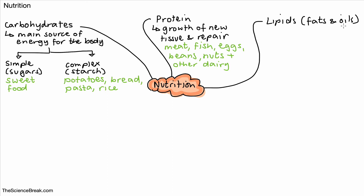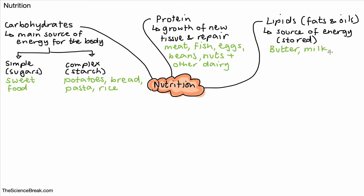Next, let's look at a food group called lipids. Lipids are basically fats and oils, and they have a role in the body as well. They provide a source of energy, just like carbohydrates, but tend to have a little bit more energy in them and are more often a source of stored energy. We can get lipids from things like butter, milk, eggs, and nuts.